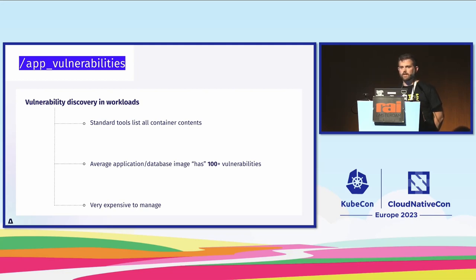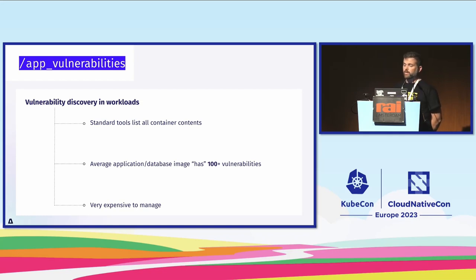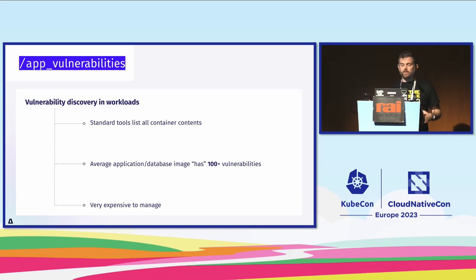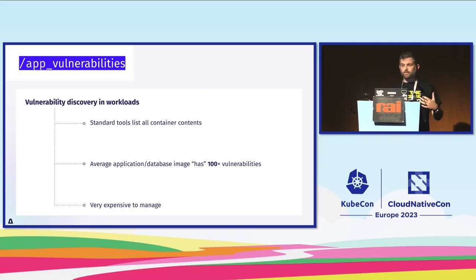The first topic is application vulnerabilities. Most of us use different security scanners to detect vulnerabilities in our software packages and container images — tools like Trivy, Grype, Anchore, Snyk, and so on. The problem is that in production we often have public open-source images with over 100 or even 200 vulnerabilities, which is really hard to handle. Even for bigger companies with more microservices, this doesn't scale well and is very costly to manage.